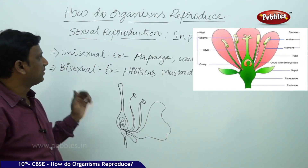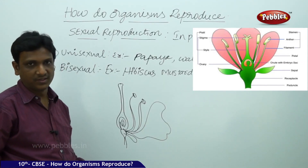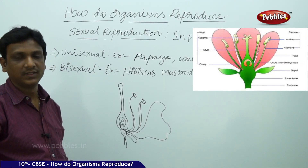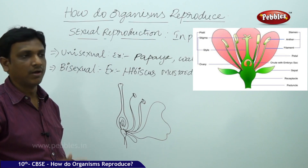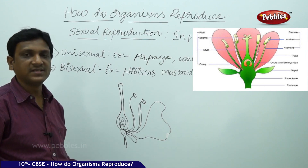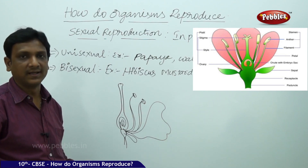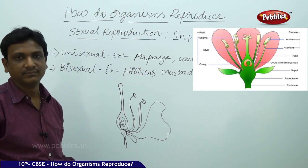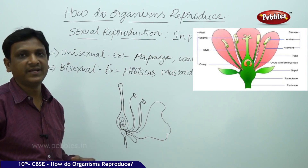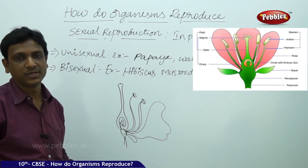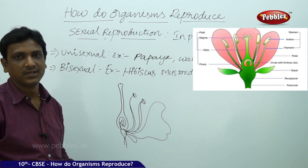So now let us see the sexual reproduction in plants. I already told you the flower is the reproductive unit — it consists of reproductive parts.